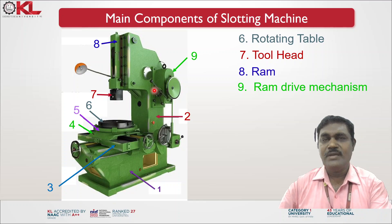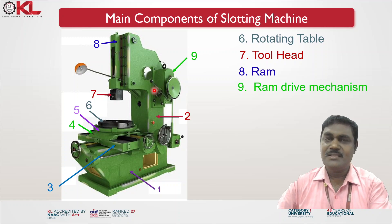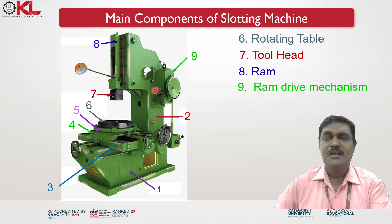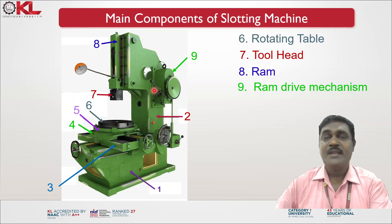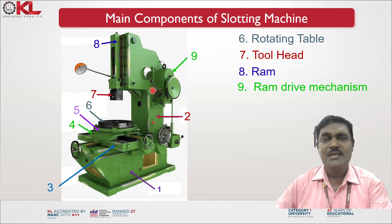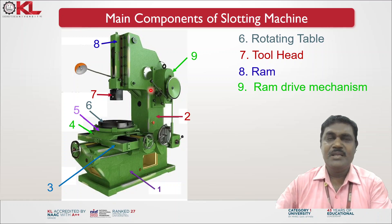As I explained in the last video on the shaping machine, the same mechanism is incorporated in the slotting machine as well — that is the Whitworth quick return motion mechanism, or crank and slotted lever mechanism. This is used to give different speeds to the stroke of the RAM: the forward stroke moves slowly and the return stroke moves fast, in order to minimize idle stroke time and overall cutting time for completing a particular job.